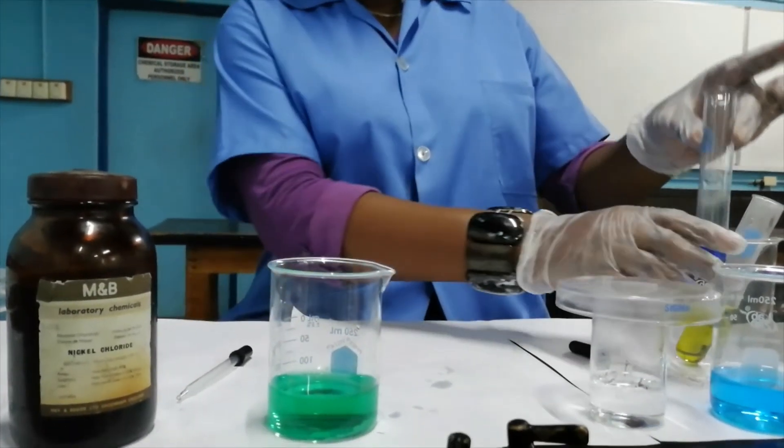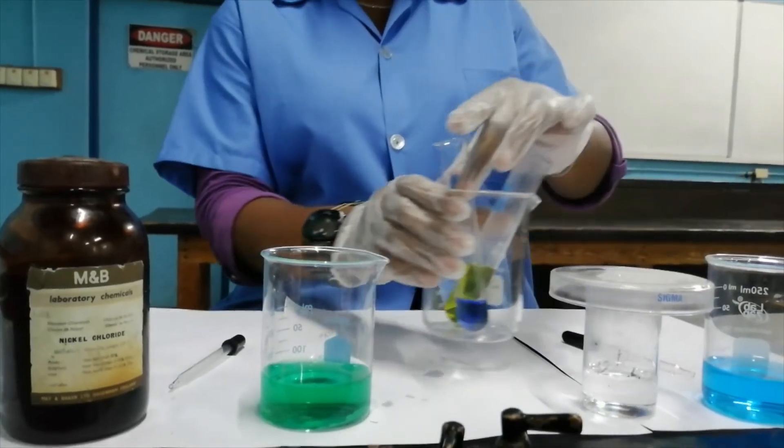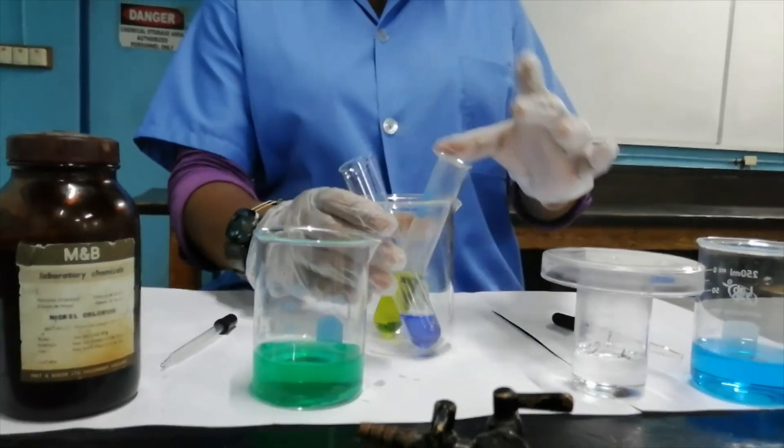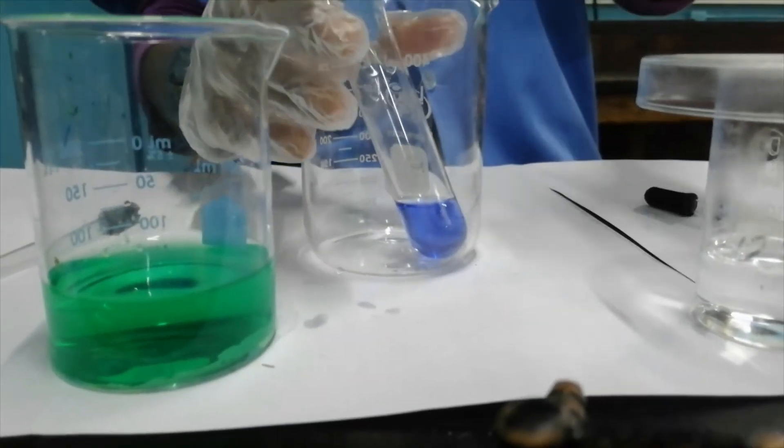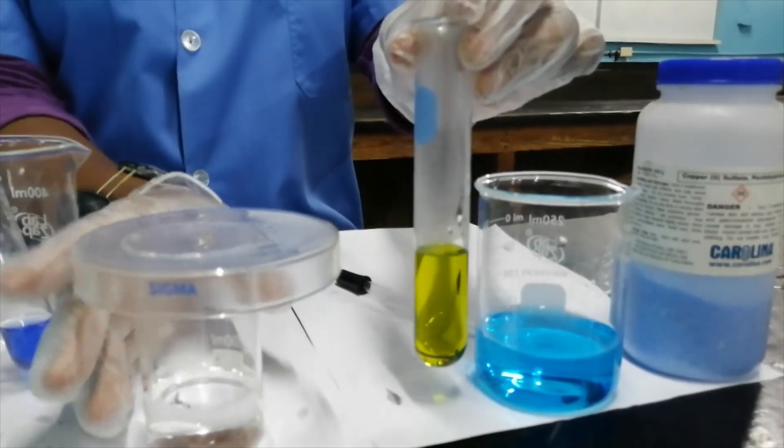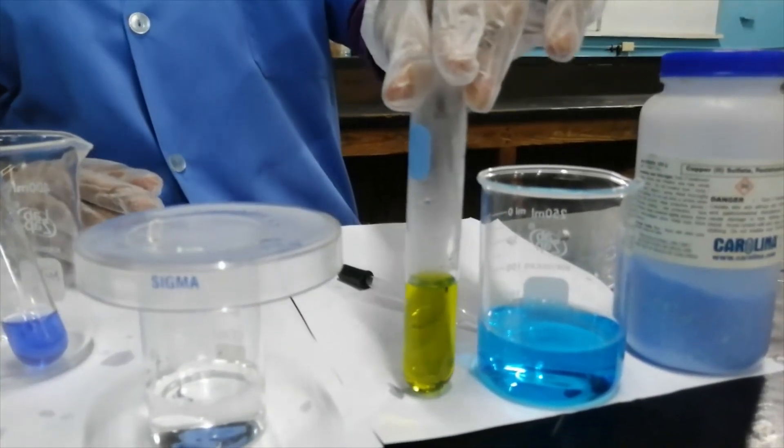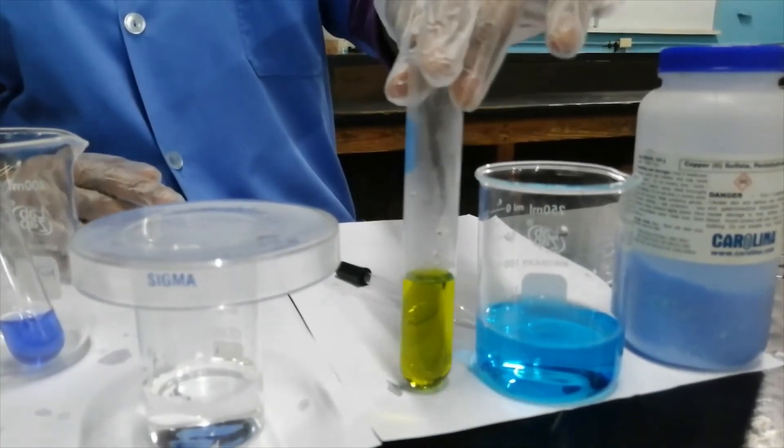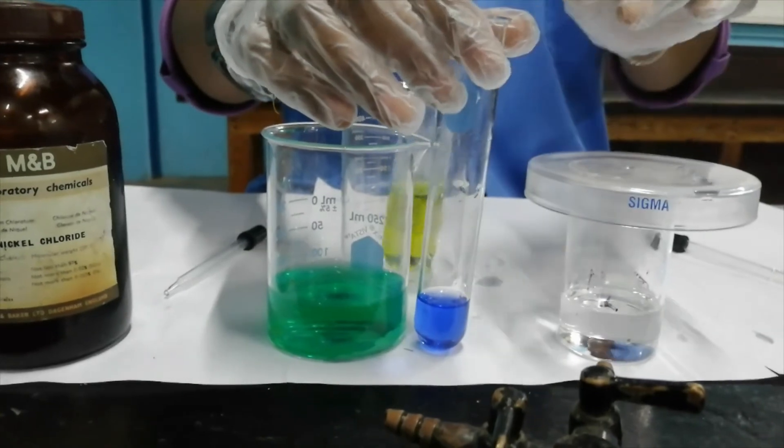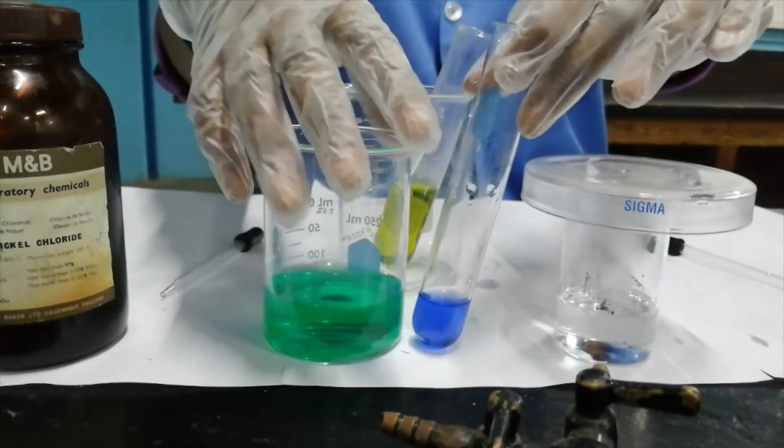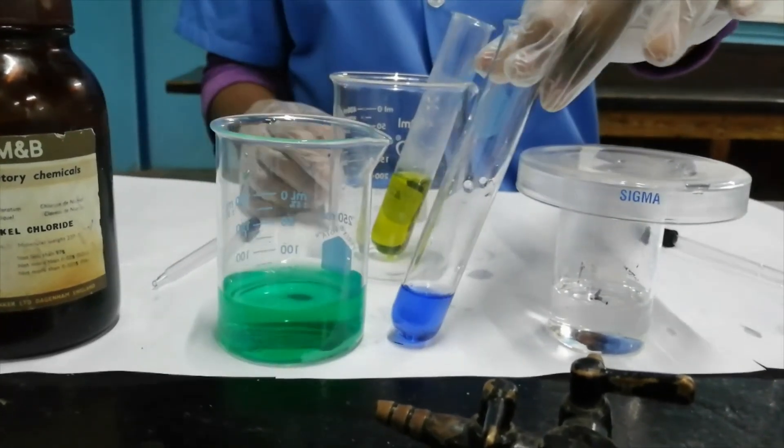Please take note of the colors of the solutions before, during, and after the experiment. To summarize now, the copper sulfate solution, when you added the concentrated hydrochloric acid to it, it moved from blue to green to yellow. With the nickel II chloride solution, when we added the concentrated aqueous ammonia to it, it moved from green to blue.